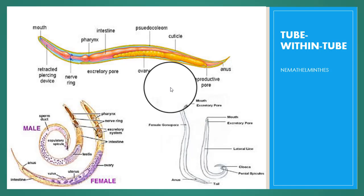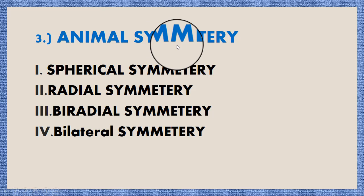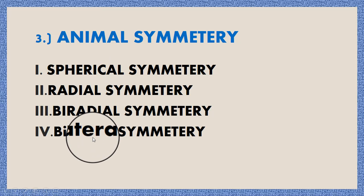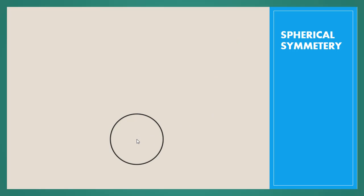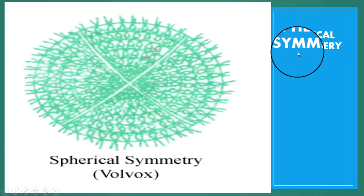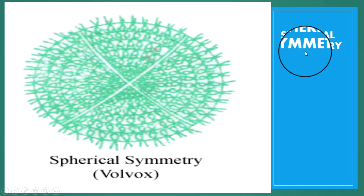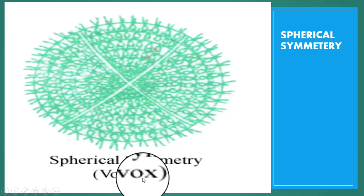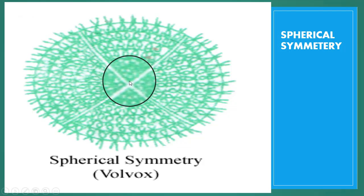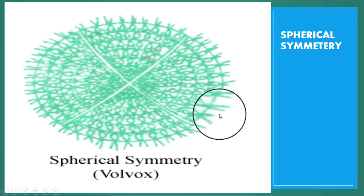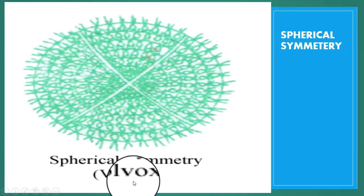The next basic point is animal symmetry. Animals have four types of symmetry: spherical symmetry, radial symmetry, biradial symmetry, and bilateral symmetry. Spherical symmetry is found in animals whose body resembles a sphere, such as Volvox. Any plane passing through the center divides the body into equivalent mirrored halves. This type of symmetry is found chiefly in protozoans like Volvox, Heliozoa, and Radiolaria, and is best suited for floating and rolling.